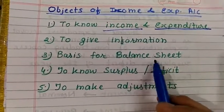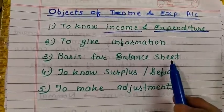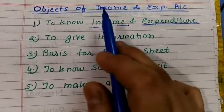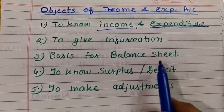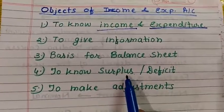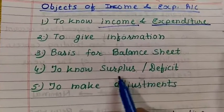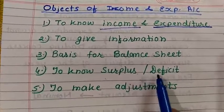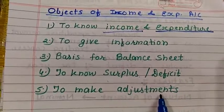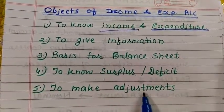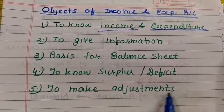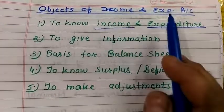Then, basis for balance sheet: this account gives a basis for the balance sheet. Once this account is prepared, the balance sheet is prepared after knowing the surplus or deficit. Without this, the balance sheet cannot be prepared. This account is also prepared to know the surplus or deficit — surplus means excess of income, deficit means excess of expenditure. Additionally, for making different adjustments like outstanding expenditures, prepaid expenditures, accrued income, and unearned income, the Income and Expenditure Account is necessary to prepare.